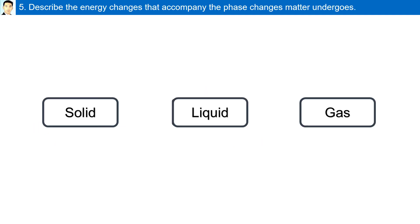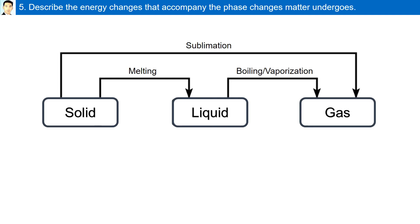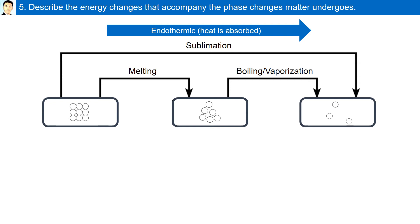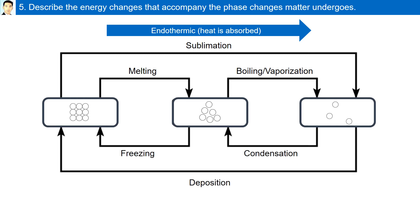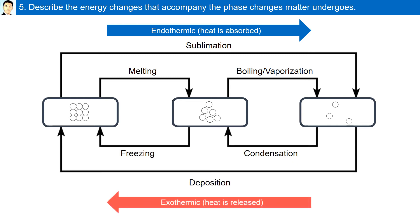How can we describe the energy changes that accompany the phase changes matter undergoes? As you go from a solid to a liquid to a gas, or directly from a solid to a gas, the particles get further apart and gain energy from the surroundings. Since you are absorbing heat from the surroundings, these are endothermic processes. Melting, boiling or vaporization, and sublimation are all endothermic reactions. Condensation, freezing, and deposition are exothermic — heat is released by the system to the surroundings as particles go from a gas to a liquid, and then more heat is released as a liquid particle forms a solid.